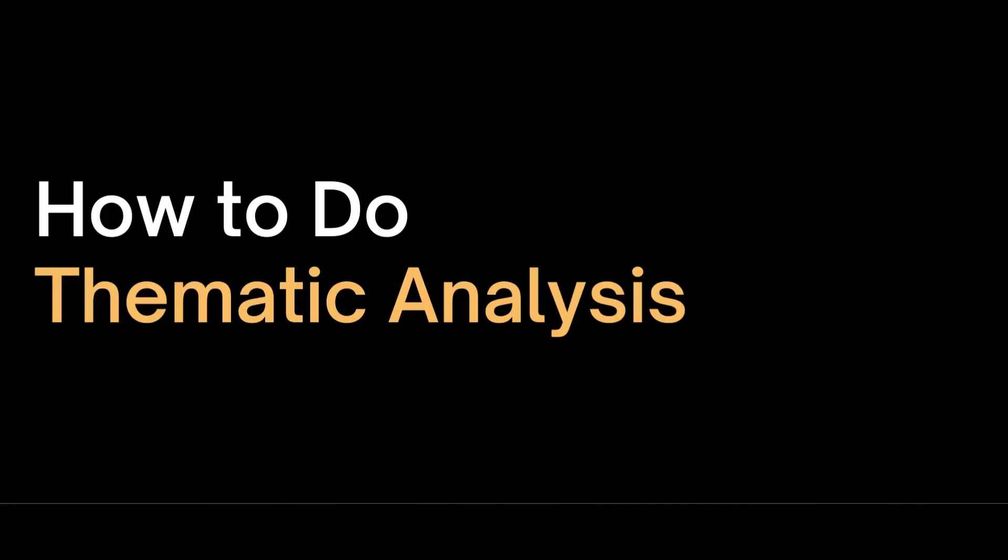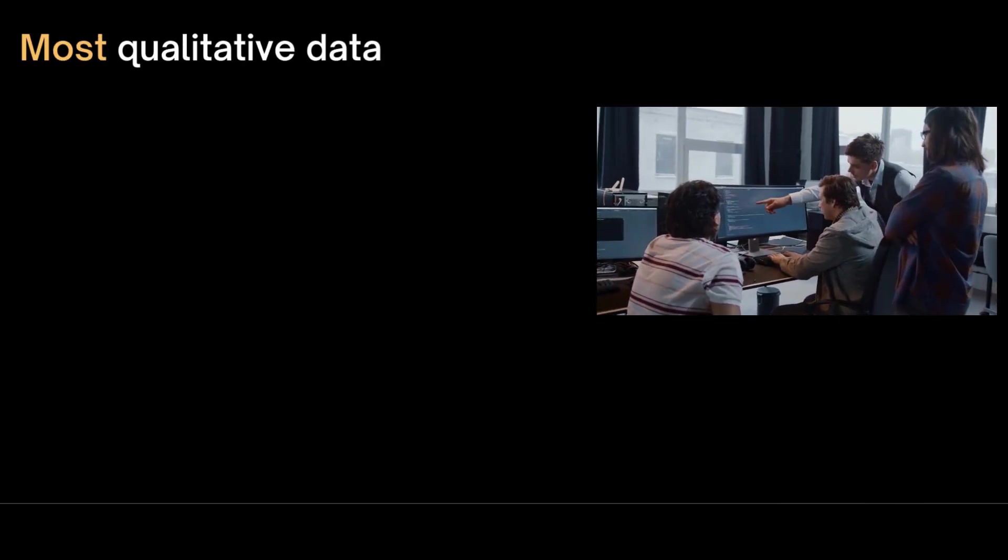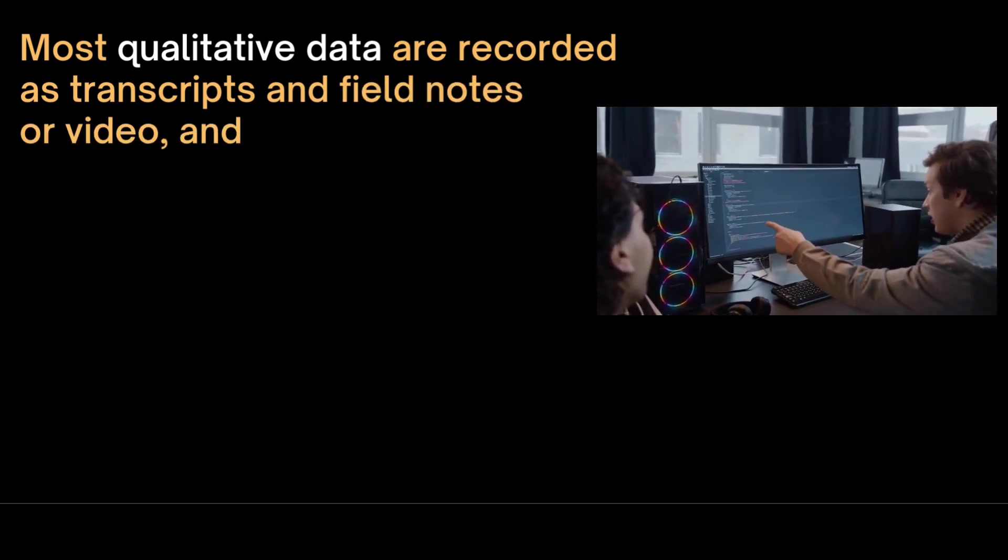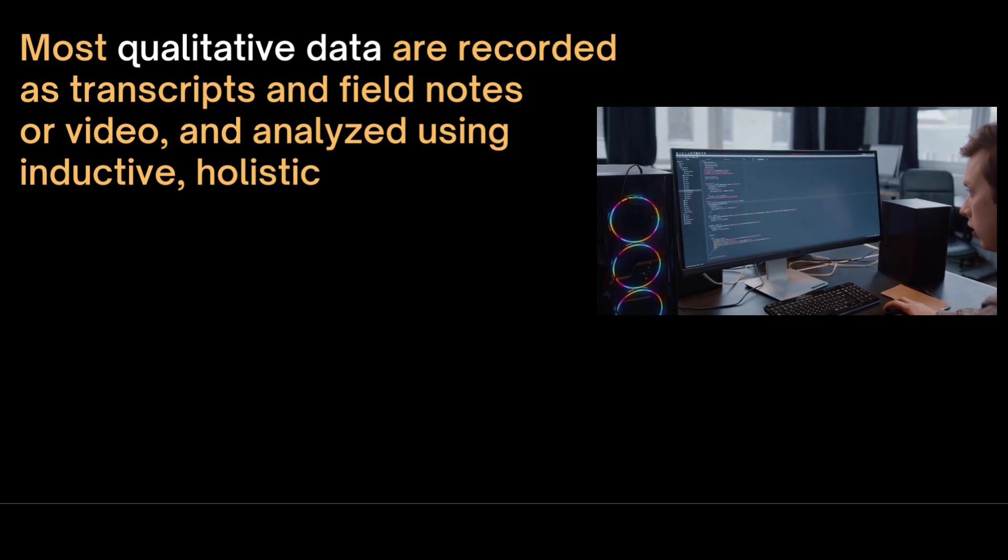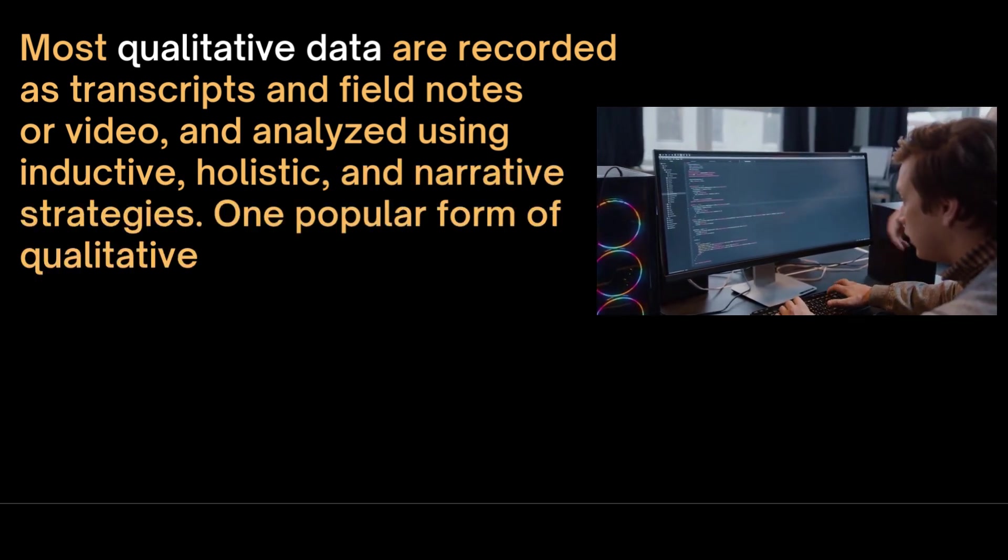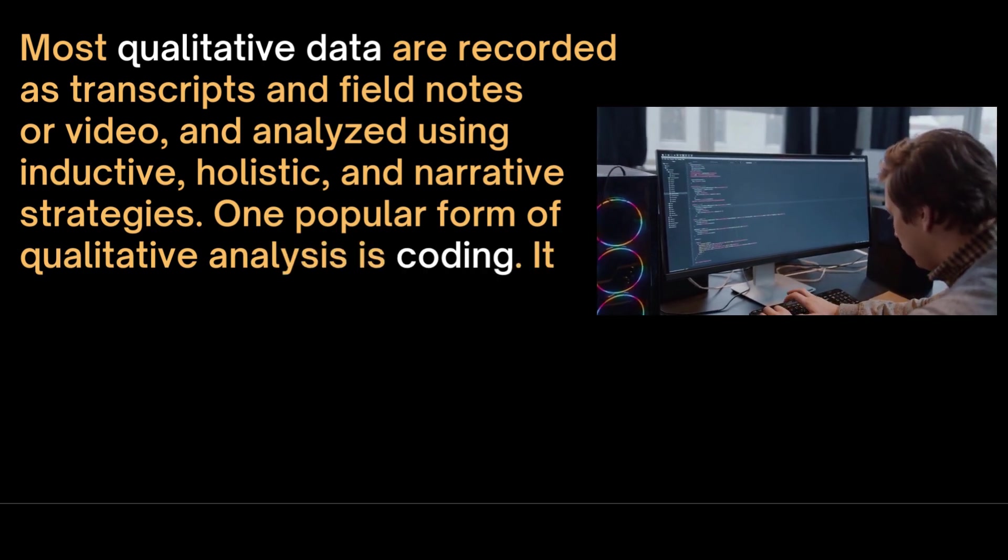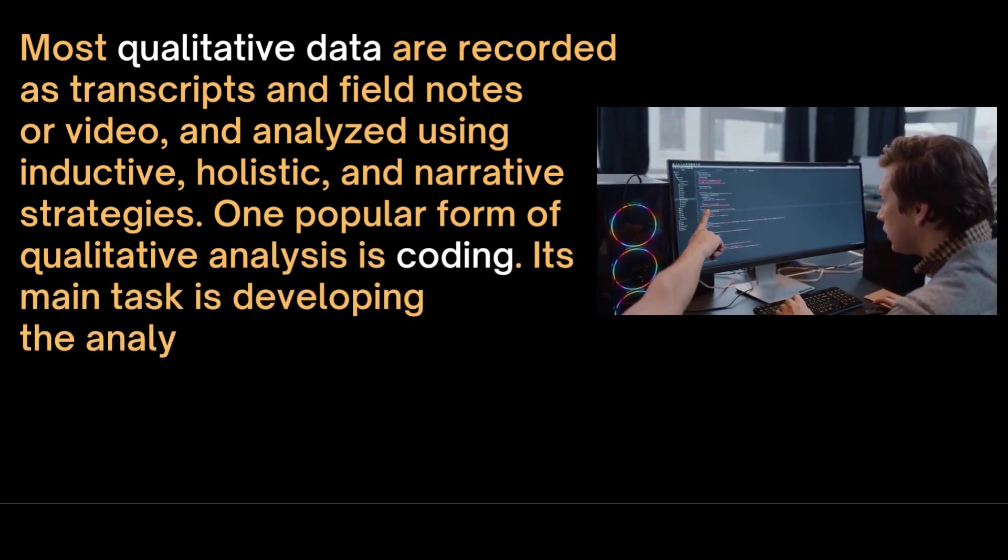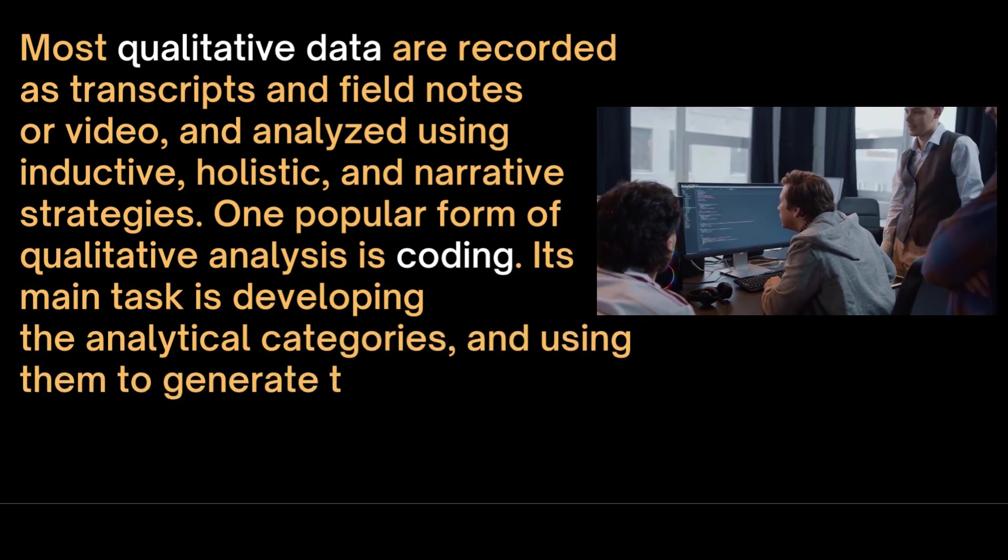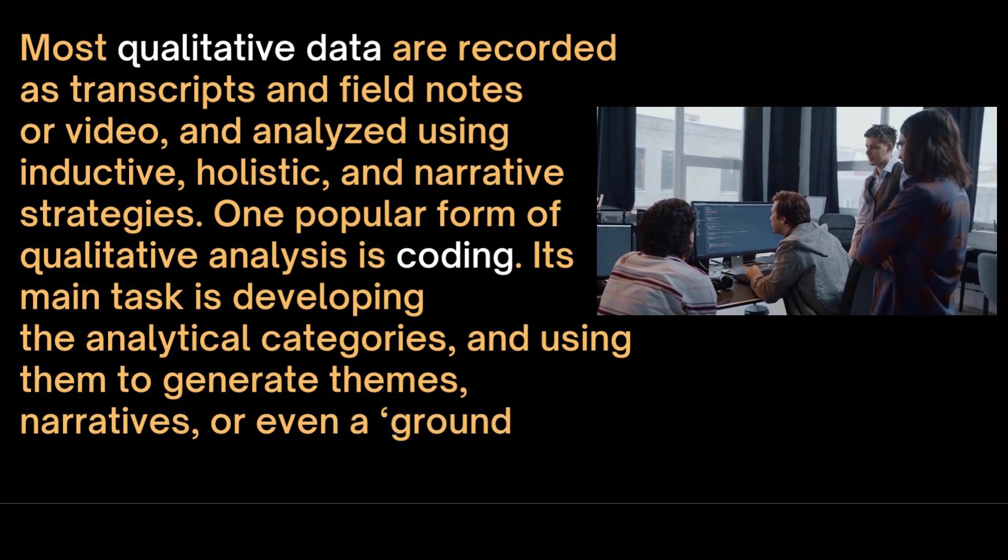Virginia Braun and Victoria Clark in 2006 proposed a six-phase guide which is very useful for conducting thematic analysis. Most qualitative data are recorded as transcripts and field notes or video and analyzed using inductive, holistic, and narrative strategies. One popular form of qualitative analysis is coding. Its main task is developing analytical categories and using them to generate themes, narratives, or even a grounded theory of the phenomena.